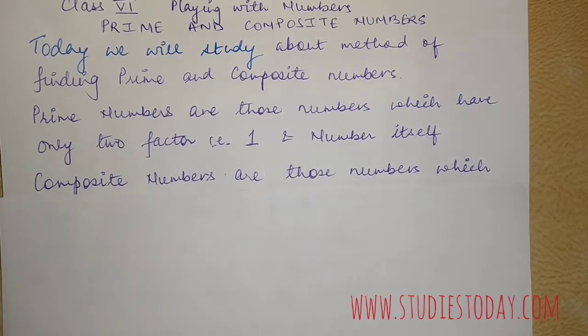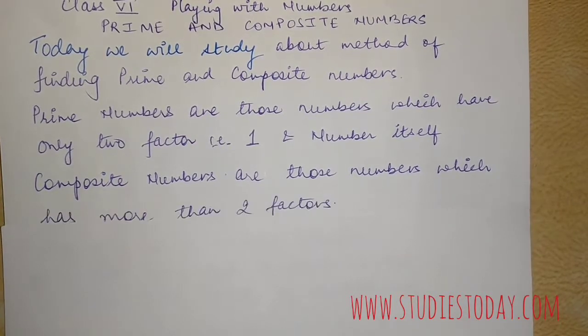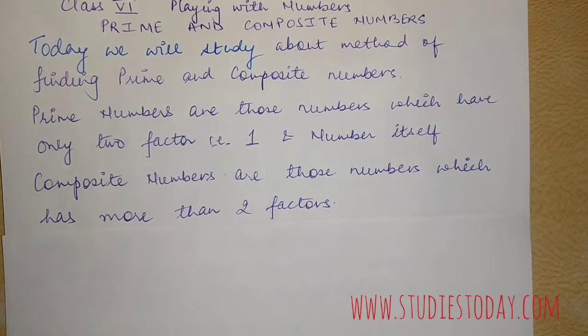Now the definition of composite number. Composite numbers are those numbers which have more than two factors. Like I said in prime numbers, there are only two factors, one and the number itself. In composite, you have one, the number itself, and some more factors.